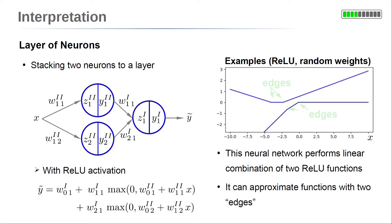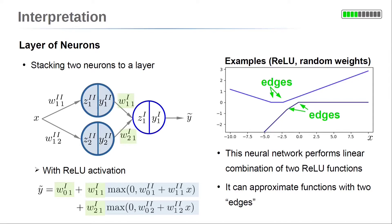On the right side, two examples of the resulting functions with random parameter values are shown. The functions are not limited to positive values because of the linear combination at the output neuron. This linear combination scales two ReLU functions which are shifted and scaled individually by their own parameters. Each ReLU function has a kink at a certain x-axis position determined by layer 2 parameters. Two ReLU functions lead to two different kinks, so the resulting functions have two edges each — in other words, they are composed of three line segments.